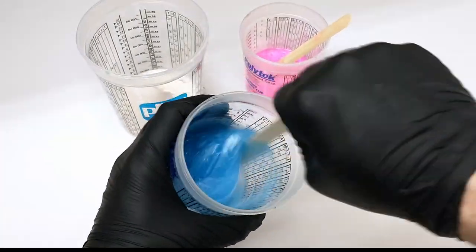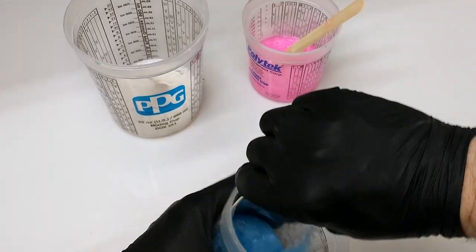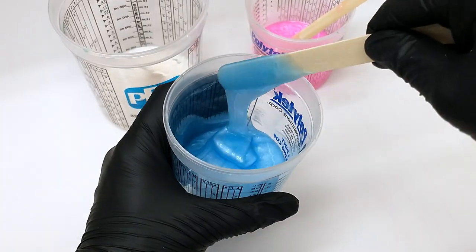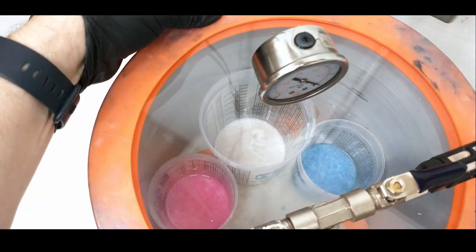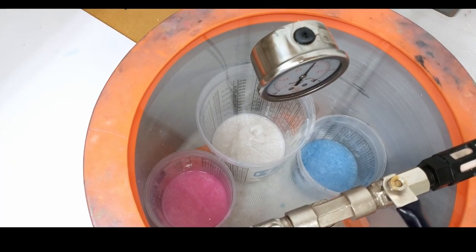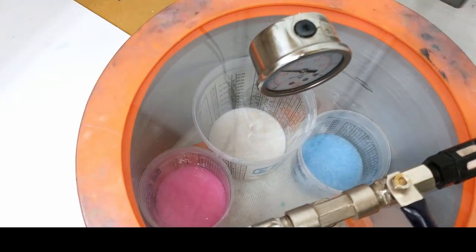Now check, make sure there aren't any chunks of pigment. We've got tons of bubbles, but no chunks, and that's good. Now we're going to use the vacuum chamber to suck all of that air out of that silicone.